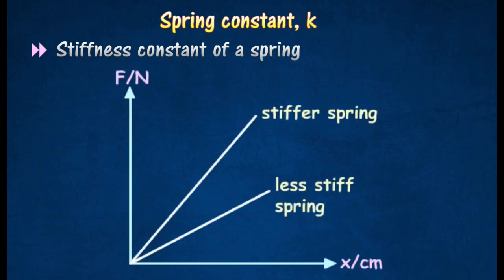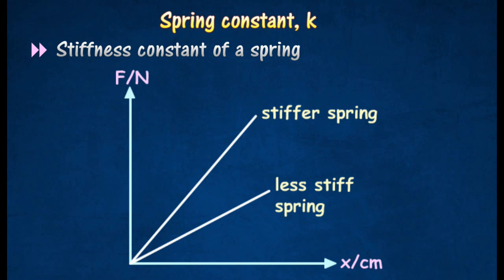Materials that have a high spring constant are more rigid and stiffer compared to those with a low spring constant. A higher spring constant would also mean that a larger force is needed to stretch or compress the material.